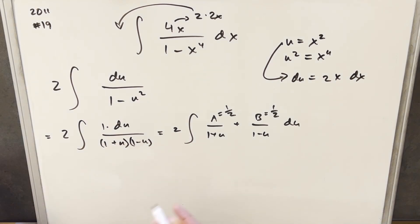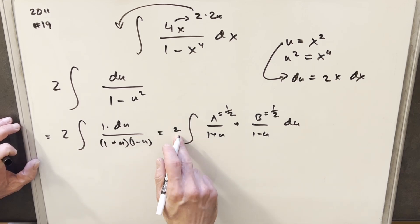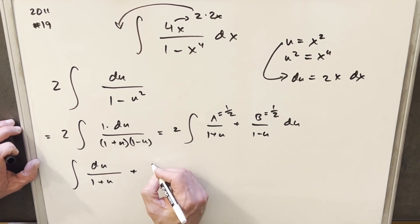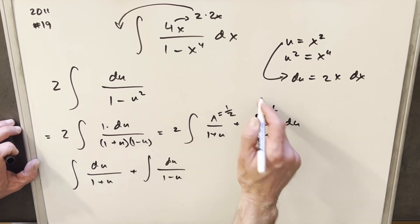And then the next thing I'm going to do is split this into two integrals. But we'll notice when you distribute in this 2 times the 1 half, you're just going to have a 1. So writing this as two integrals, we're going to have du over 1 plus u. And then for this second integral, we're going to have du over 1 minus u. Again, the two distributed over here.